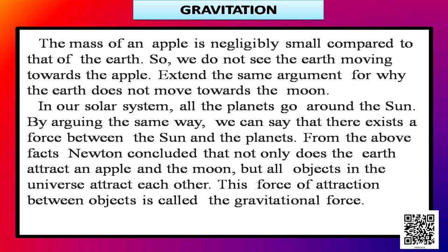The same argument explains why the earth does not move towards the moon — the moon has a very low mass in comparison to the mass of the earth. Though there is a force of attraction between them and both apply force on each other, the moon moves around the earth in circular motion. Earth never goes towards the moon. In our solar system, all the planets go around the sun — there exists a force between the planets and the sun, but as the mass of the sun is very high compared to the planets, the planets move around the sun.